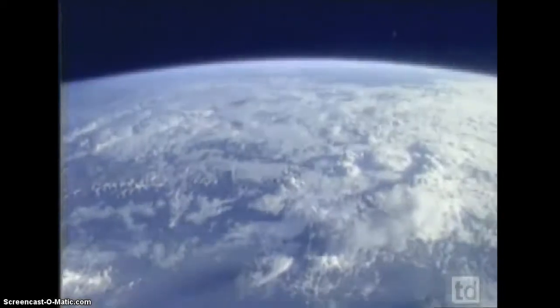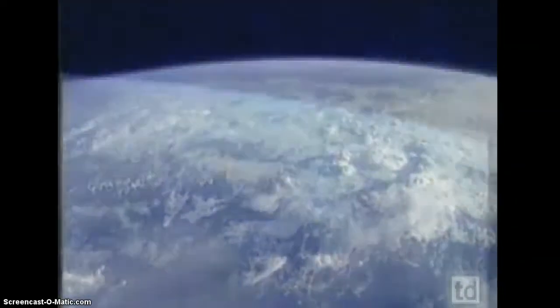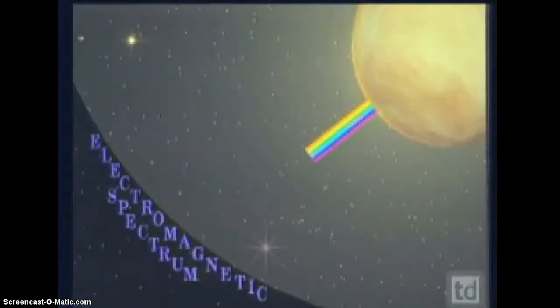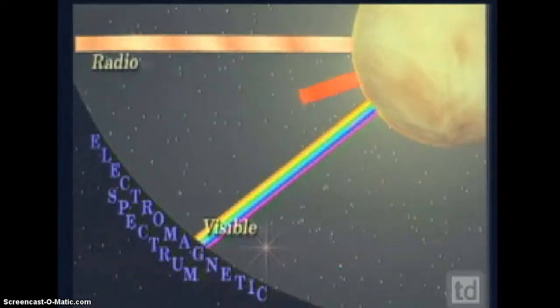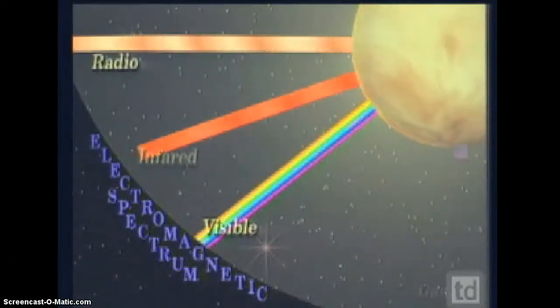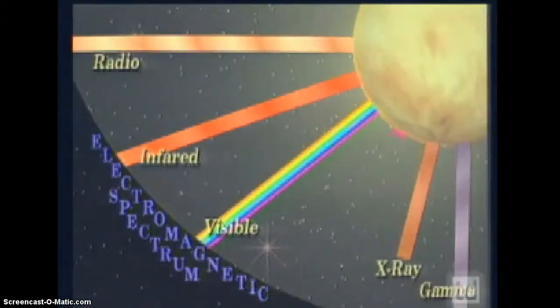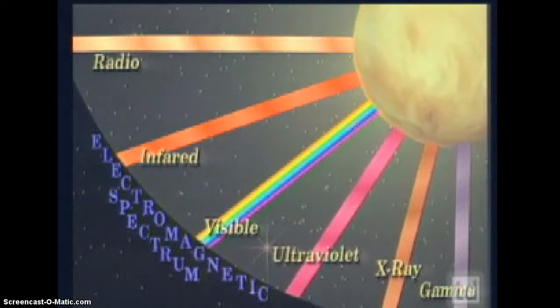A beautiful blue marble. Who would guess that serious changes are taking place in its atmosphere? These visible wavelengths are only a part of the electromagnetic spectrum. What we don't see are the radio, infrared, gamma, x-rays, and the sun's particle ultraviolet rays, known as UV. So how does ozone play a part in this story?